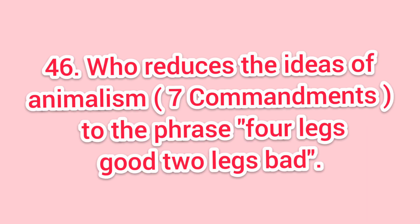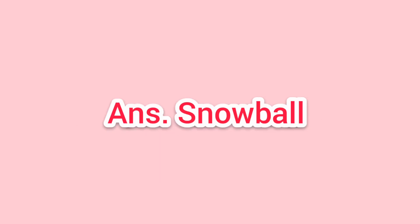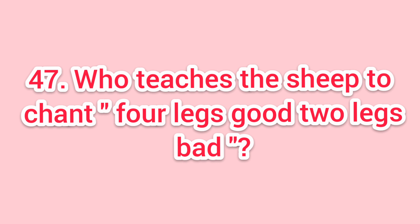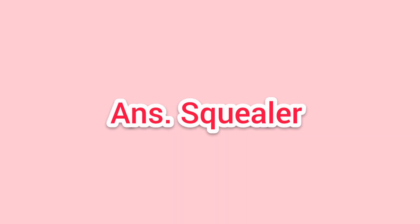Forty-six: who reduces the ideas of Animalism — i.e. the seven commandments — to the phrase 'four legs good, two legs bad'? Answer: Snowball. Forty-seven: who teaches the sheep to chant 'four legs good, two legs bad'? Answer: Squealer.